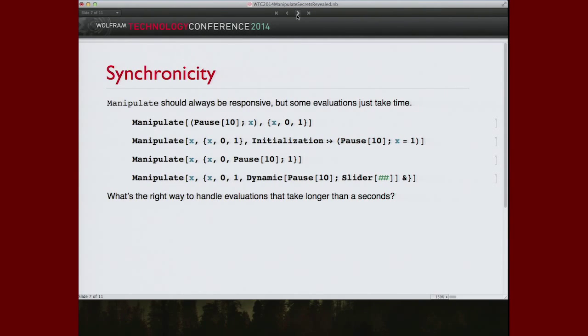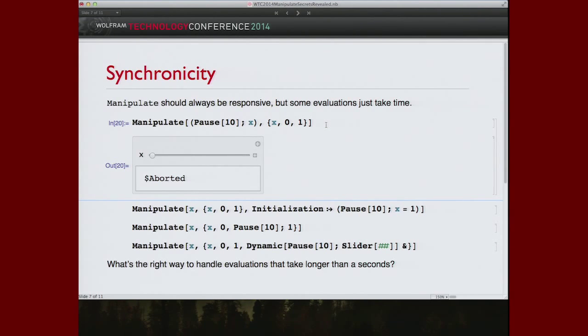Manipulate is fine and everything, but Mathematica lets you do evaluations that take days. How do you reconcile an interface that the user is supposed to interact with and get fast results, you hope, with evaluations that might take an arbitrary open-ended amount of time? What are the tools with which you can handle those situations? Let's look at the kinds of things you run into now if you don't know about what I'm about to talk about.